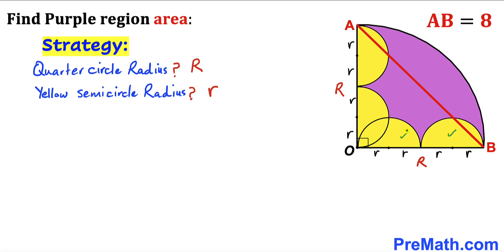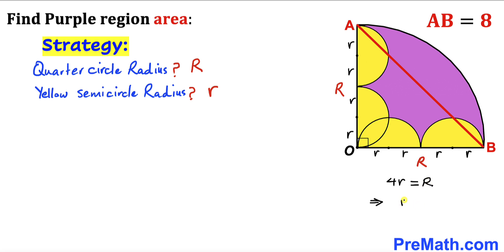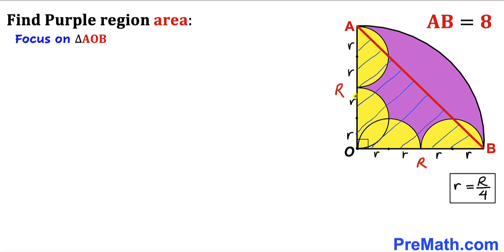Since all these yellow semicircles are identical, we are going to have lowercase r as the radius for all semicircles. Furthermore, the length OB equals r + r + r + r, which is four times lowercase r. OB is also equal to uppercase R. So therefore 4r = R, or in other words, r = R/4.